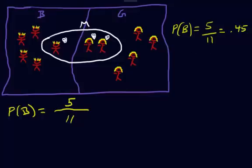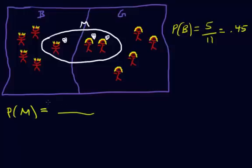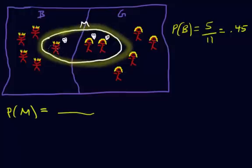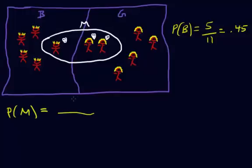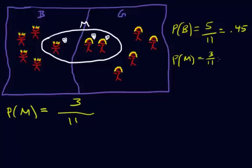Follow-up question: what is the probability that you choose someone who likes math? Same logic — randomly selecting someone, what are the chances you pick someone who likes math? Here's your math region. How many people are in there? Three. Out of how many possible people? Eleven again. So the probability that you like math is three out of eleven, which is about .27. So clearly not the same as the probability of being a boy.